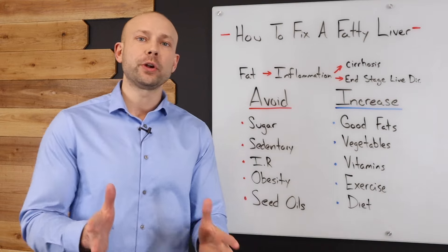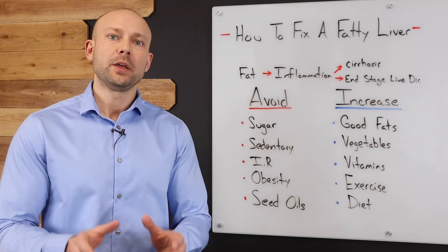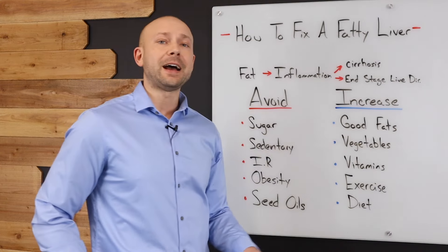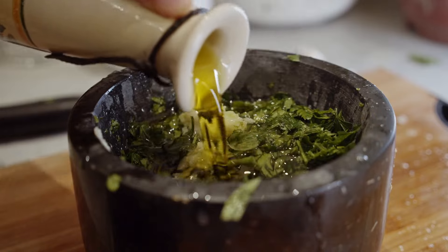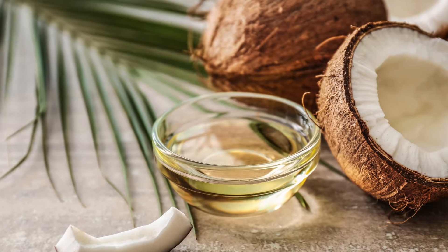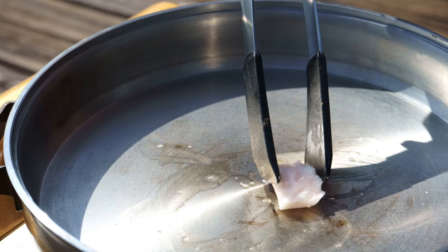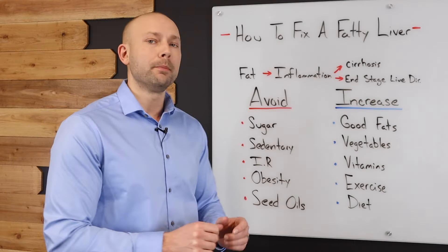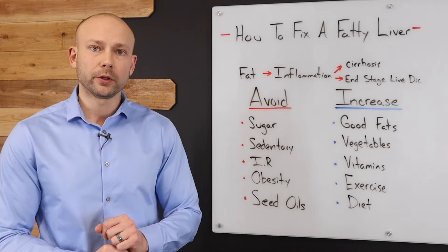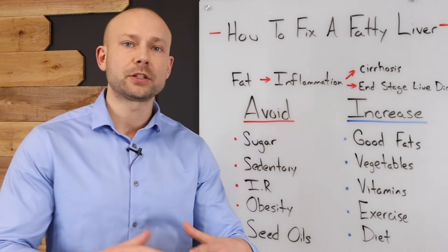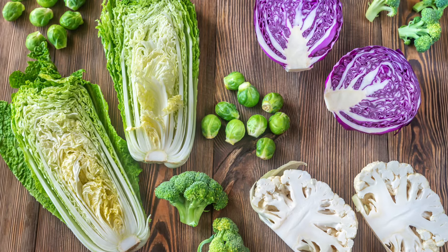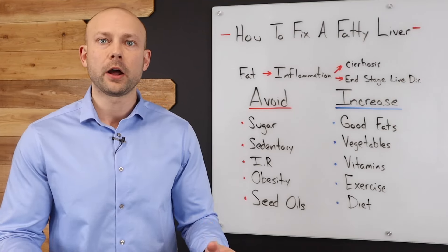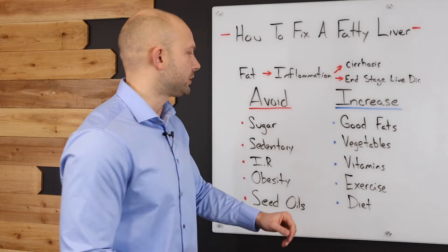Let's talk about what to increase, because this is very important — this is how you're going to solve this issue of fatty liver. First of all, we want to increase good fats: fats like avocado oil, olive oil, and even coconut oil. We can also use tallow and ghee. These are all healthy forms of fat that are going to be much better for you than seed oils. Next, make sure that you're getting lots of good vegetables — specifically, cruciferous vegetables are the best for your overall liver health, so increase your vegetable intake, specifically cruciferous.